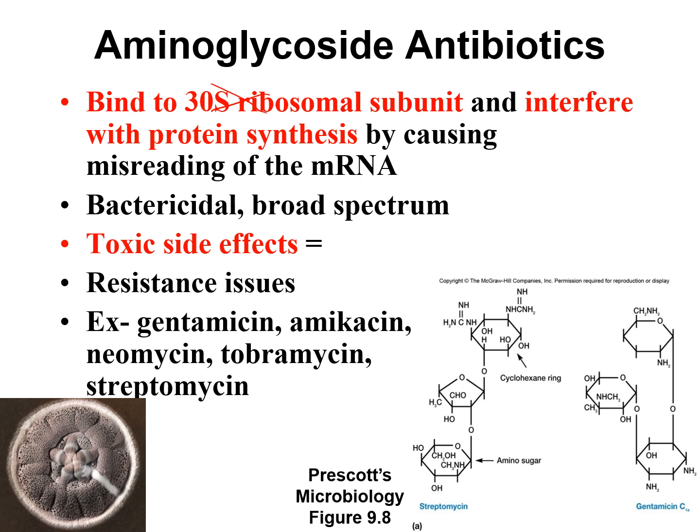The aminoglycoside antibiotics — if you're using them topically you don't have to worry as much, but if you're giving them internally to a patient, there are some toxic side effects to worry about. The two main ones are that they can be nephrotoxic, meaning they can harm the kidneys and cause the patient to go into renal failure. If a patient is on gentamicin or amikacin, they will check kidney function regularly, and if it starts to decline, they will take them off that antibiotic.